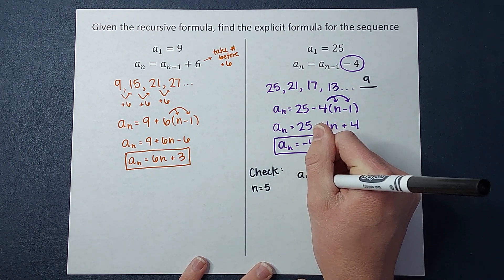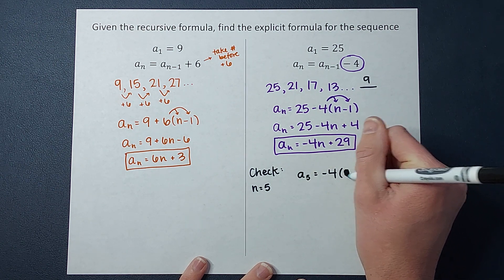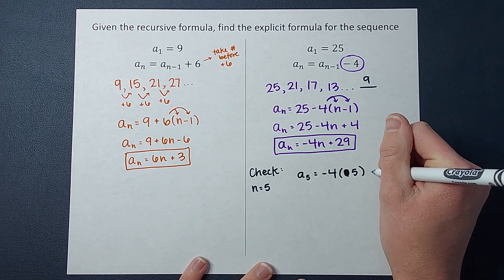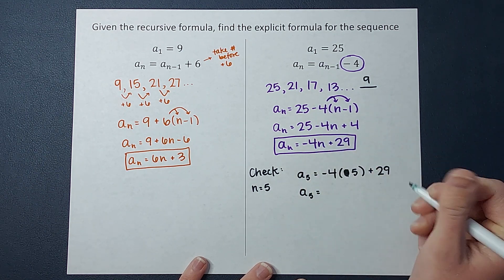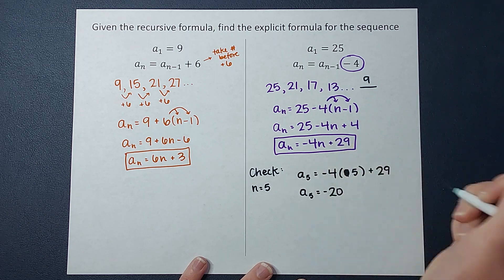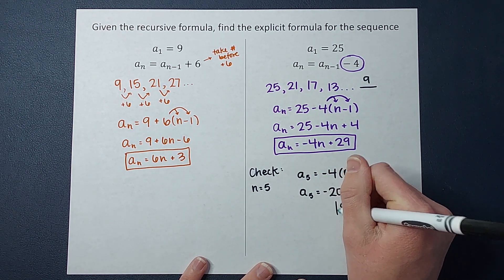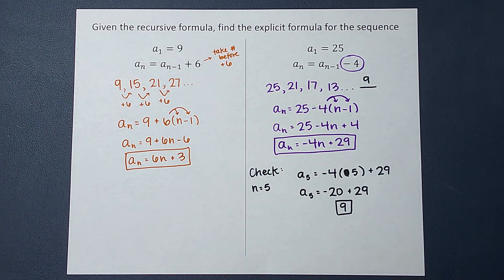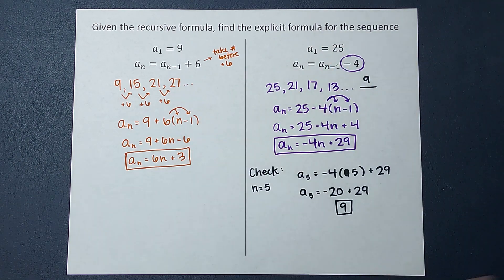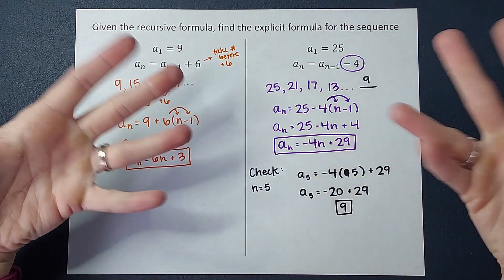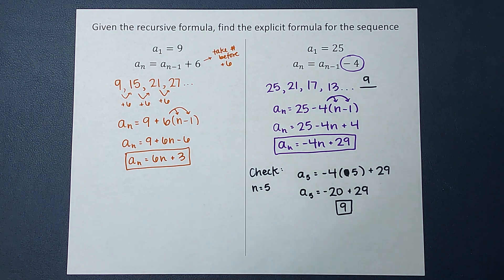So a sub 5 equals negative 4 times n which we, oh not 9. Guys we are plugging in 5 plus 29. So a sub 5 equals negative 4 times 5 is negative 20 plus 29. And guys what's negative 20 plus 29? That's 9. That's 9 yay. So I'm feeling pretty confident. I found the fifth number by using my equation. So I'm feeling pretty confident that I could find the 500th term if I wanted to or the 90th term just by plugging in that number for n.